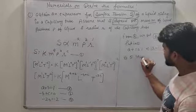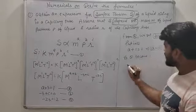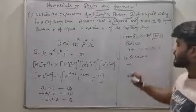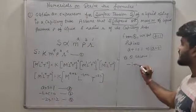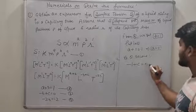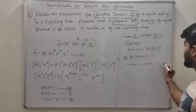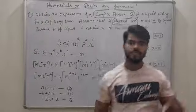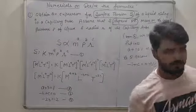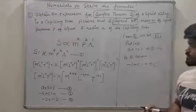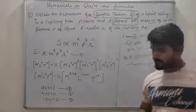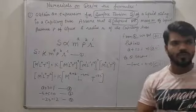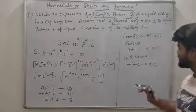Third equation में B की value 1 रखने पर: minus 1 plus C is equal to 0 — तो C की value 1 आएगी। हर बच्चा हर numerical को अपने तरीके से solve कर सकता है, कोई problem नहीं। Result सबका same आएगा — calculation आप अपने तरीके से easily कर सकते हो।